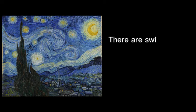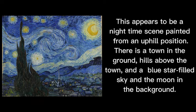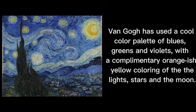There are swirls, stars, buildings, rolling hills, a large tree, the moon, trees, and a church. This appears to be a nighttime scene painted from an uphill position. There is a town in the foreground, hills above the town, and a blue star field sky, and the moon in the background. Van Gogh has used a cool color palette of blues, greens, and violets, with the complementary orange-ish-yellow coloring of the lights, stars, and the moon.